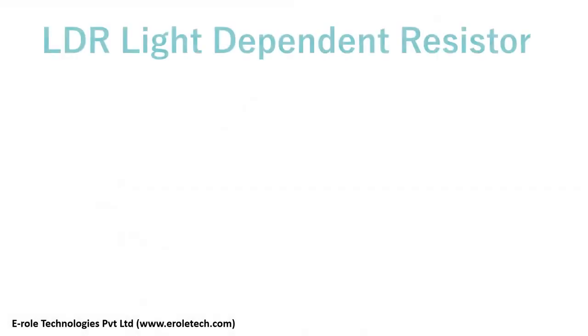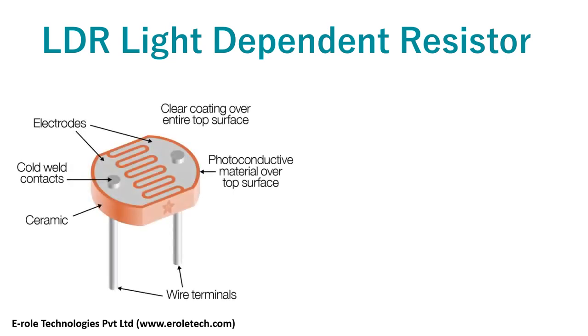LDR, a light-dependent resistor or photoresistor, is a component that is sensitive to light. The value of the resistance falls as the level of light falling on it increases.